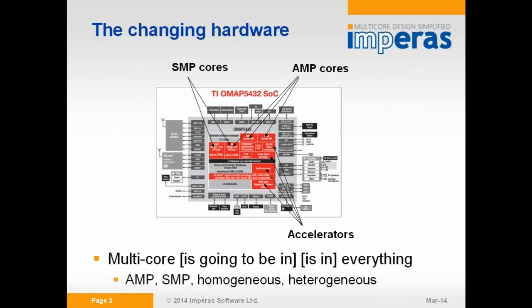Hardware is changing. This is an example from a mobile chip — not ultra-modern, maybe last generation, a TI OMAP — and it has several processing elements in it. Top left you've got SMP cores, a dual ARM A15, a couple of other Cortex M4 cores running asymmetrically, and then there's some hardware accelerators doing image processing or other analysis. So you've got many concurrent processes running software effectively, all in the same chip.